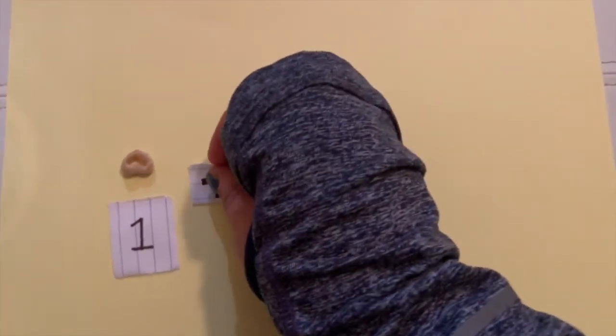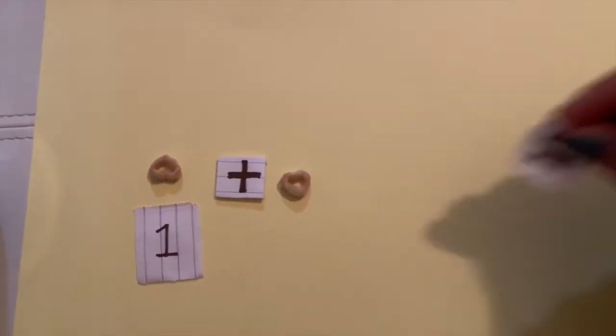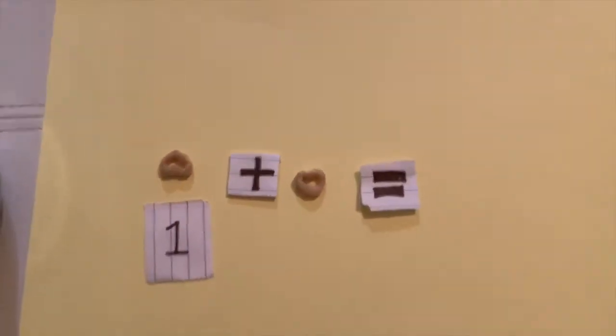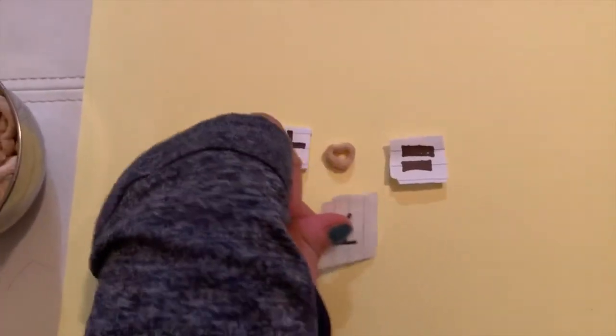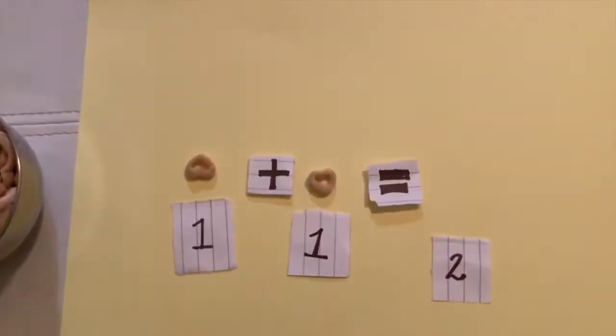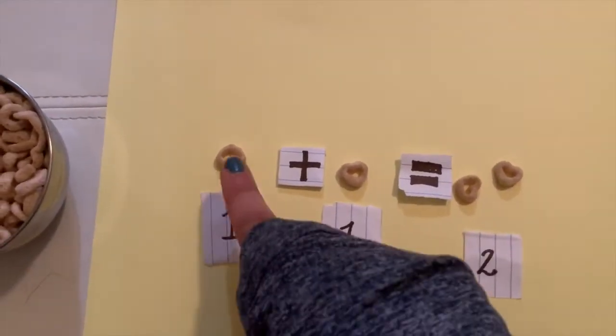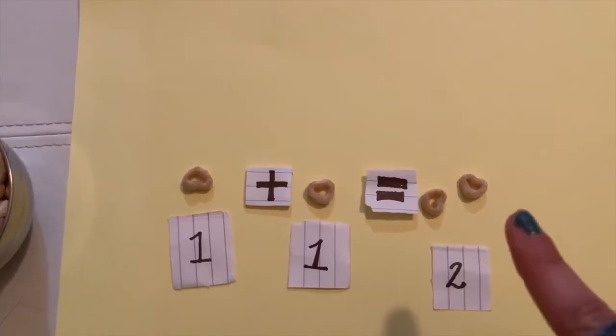We're going to start off with one Cheerio, real basic. One Cheerio. Now I'm going to add another Cheerio. Can you tell me what this adds up to? You're right, two. Two Cheerios. So we're going to put in two Cheerios. One plus one equals two.